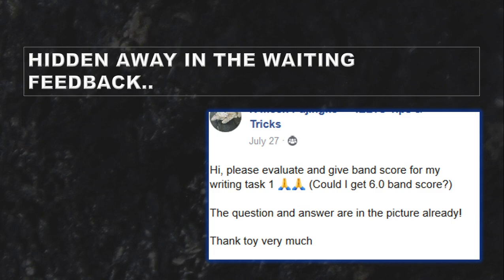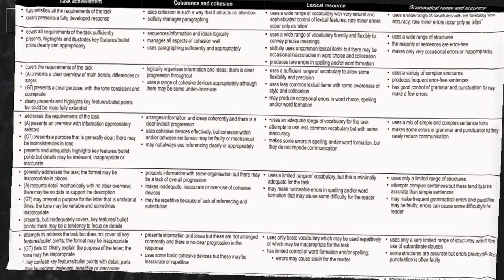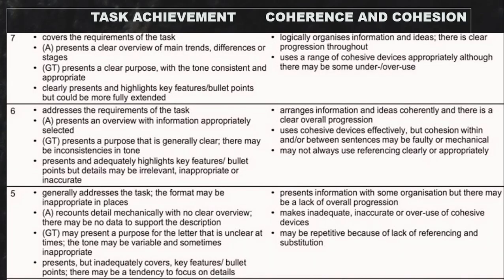The average writing score worldwide is about 5.6, so a 6.0 is above average. Now, what is a Band 6? Let's look at bands 4 through 9 in task achievement — a little different than task response. Let's focus on the important ones: 5, 6, and 7.